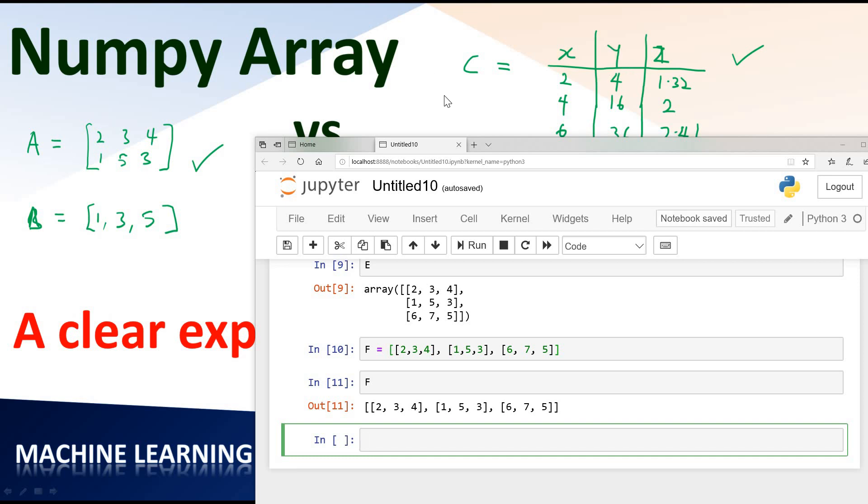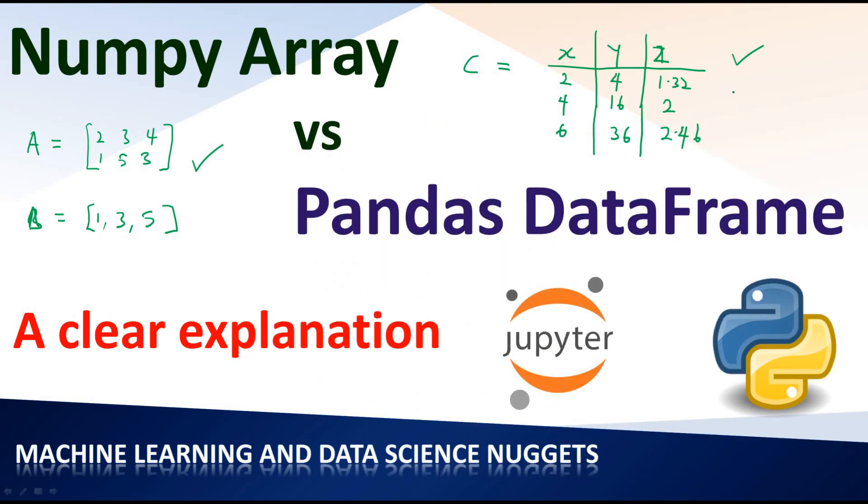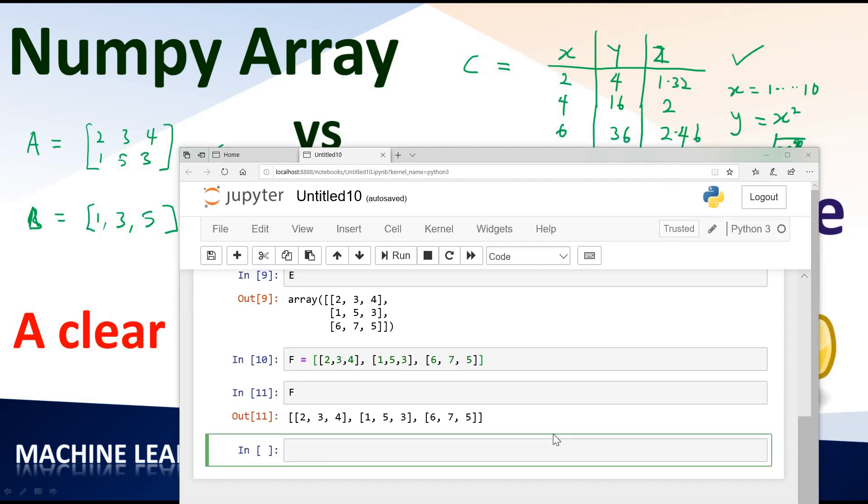I'm going to write it out. So let's say in case of c, x equals 1 all the way to 10, y equals x squared and z equals x cubed. Let's put it this way. I think, let's say z equals square root of x. So I'm going to go back. Let's now create this data frame in pandas.